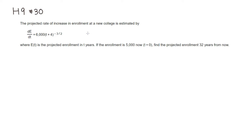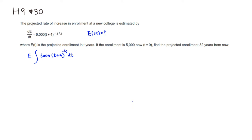We are basically looking for E of 32. So we have to find E. If you take the antiderivative of E prime, you have 6,000 and you have T plus 4, raised to the negative 3 over 2, with respect to T.